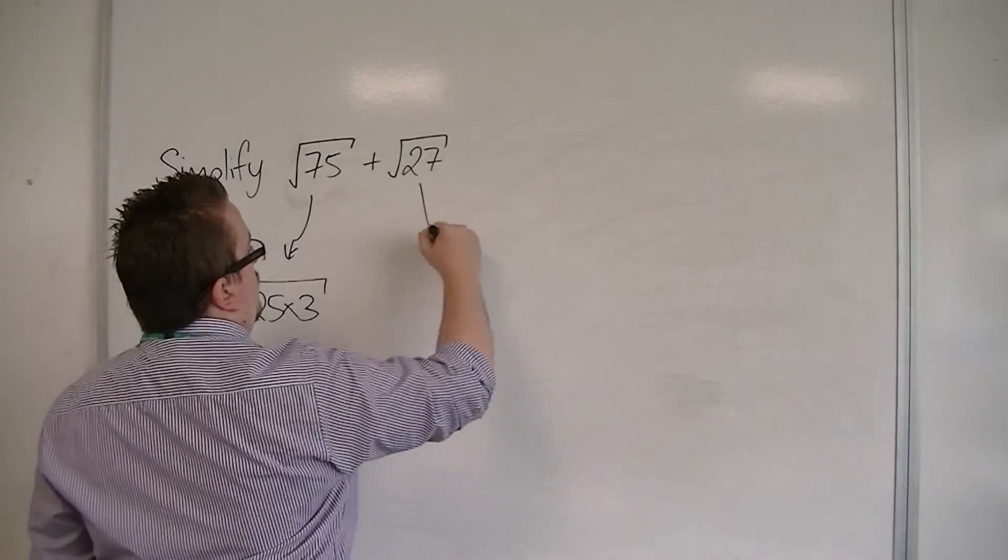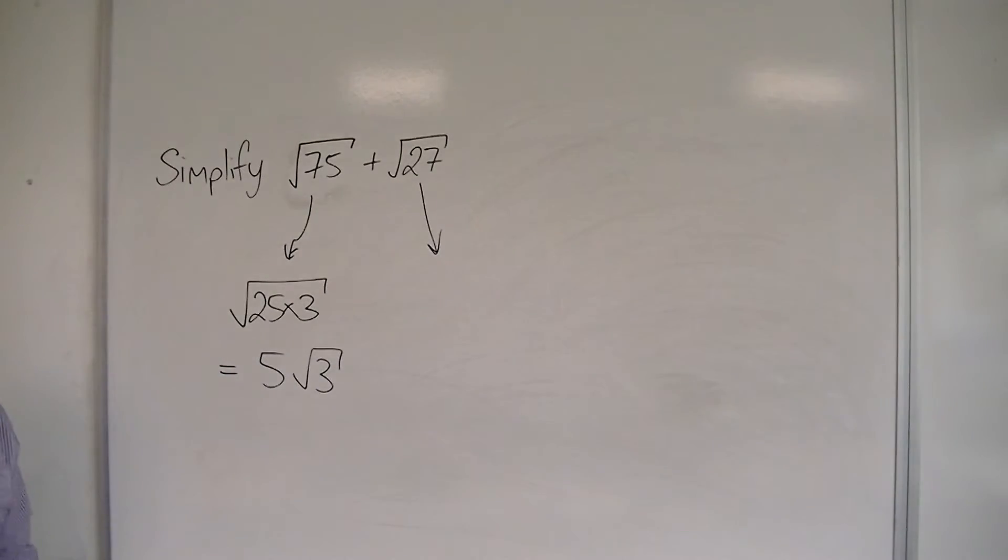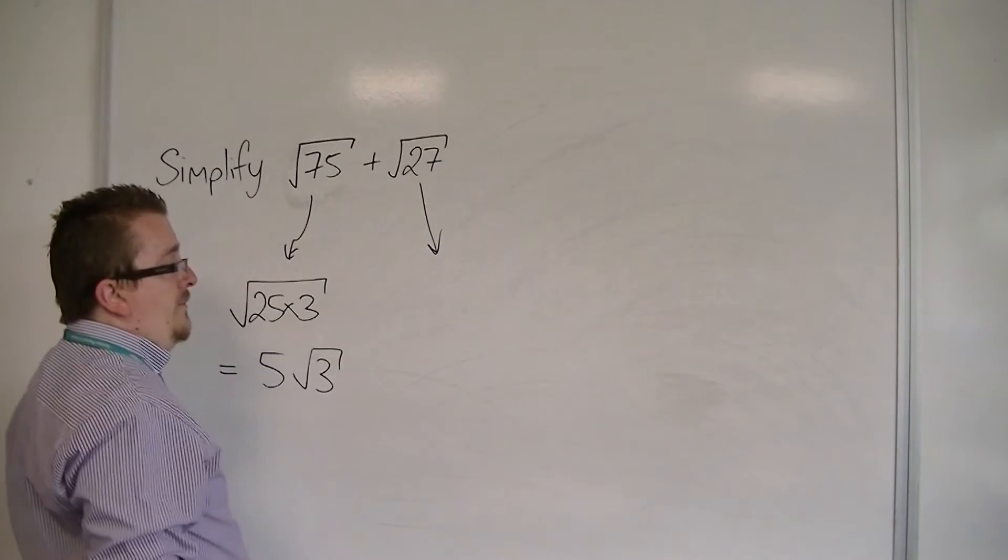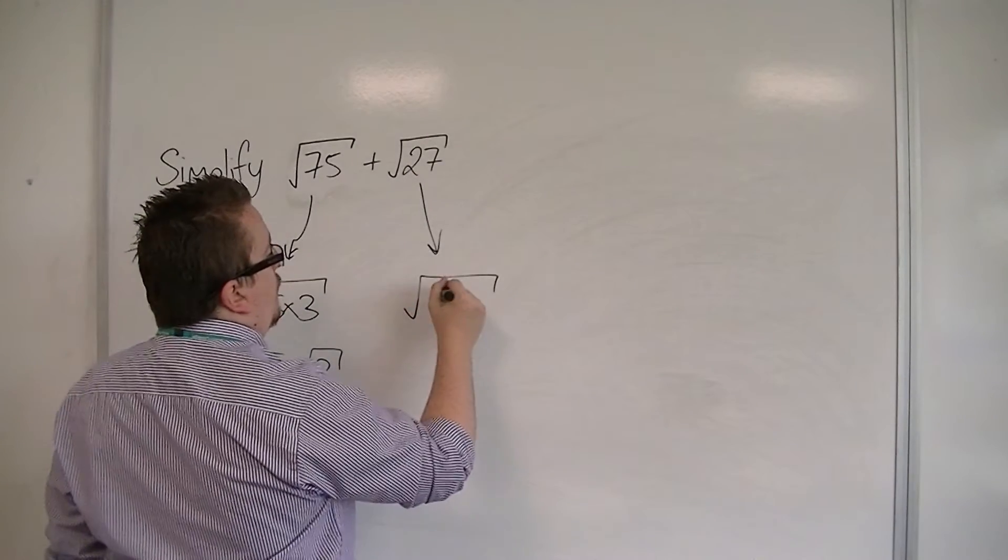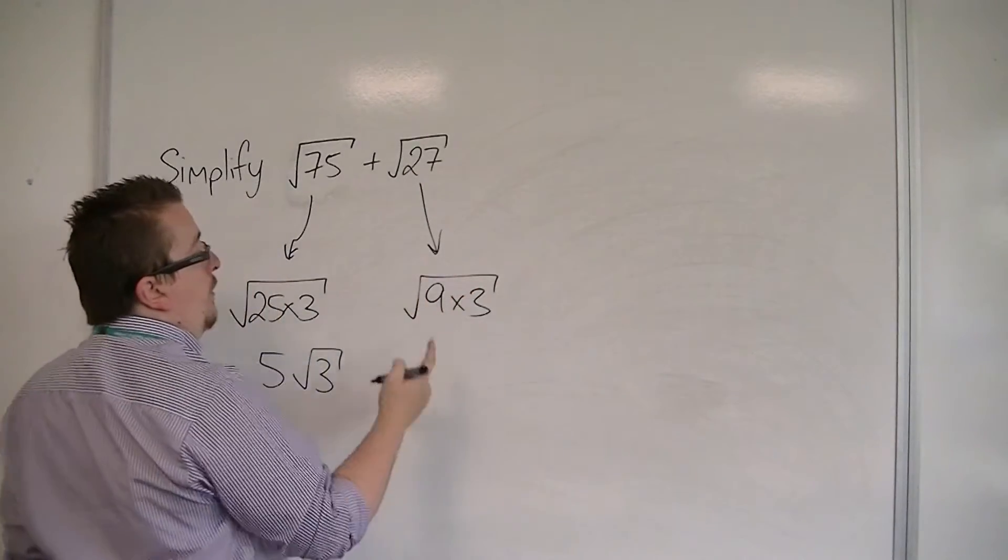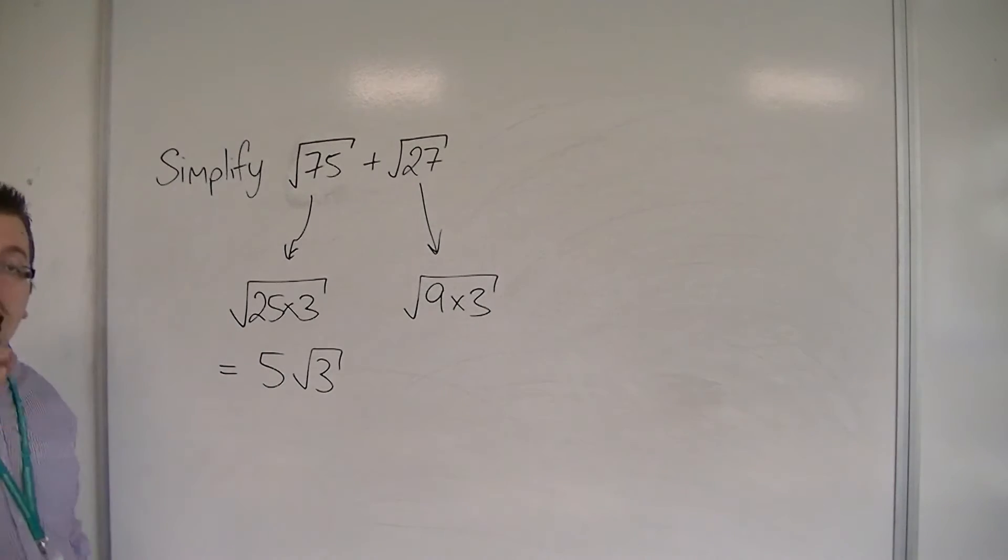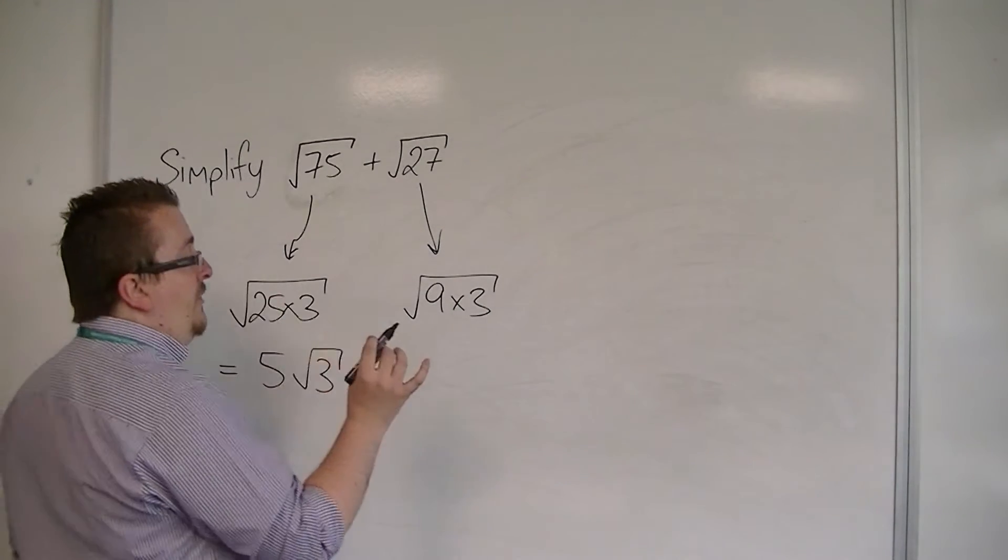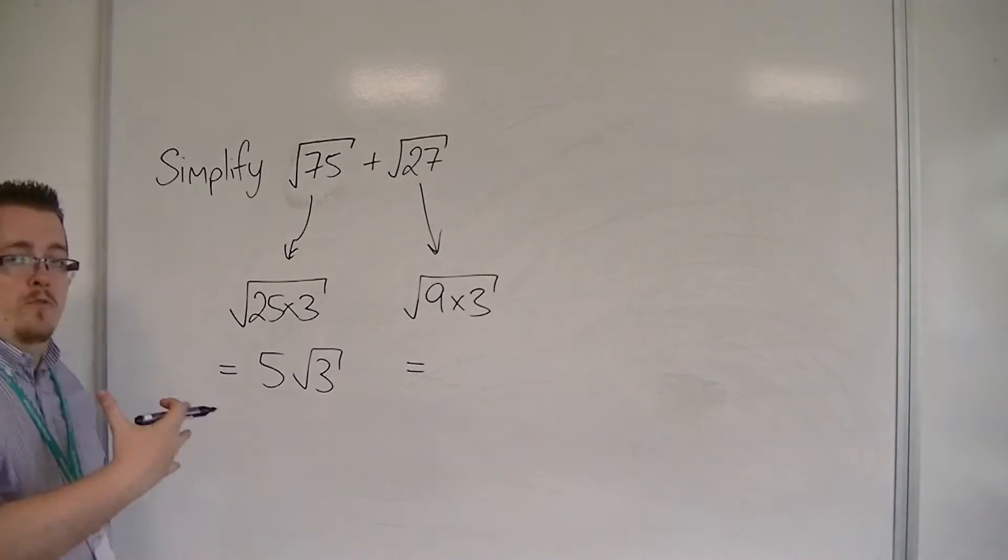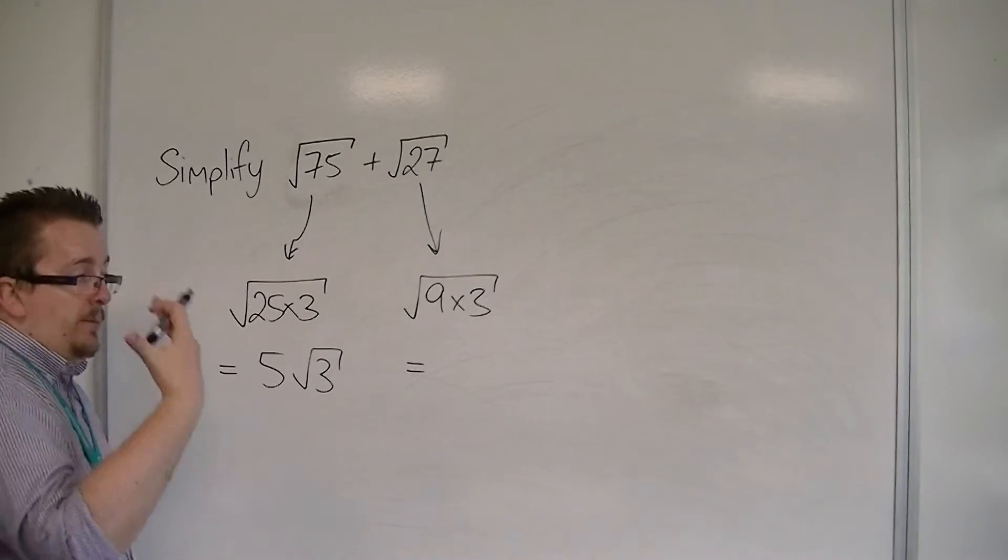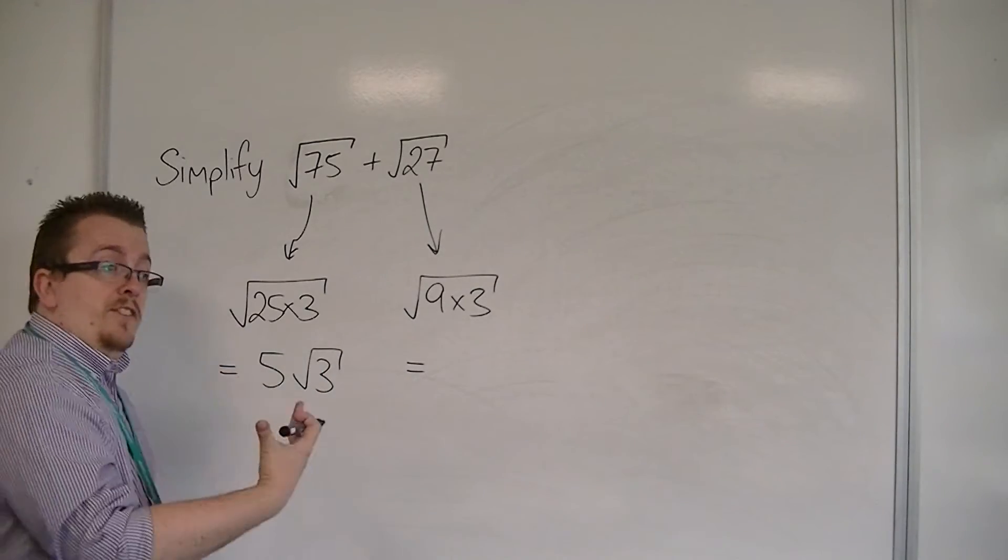Then I've got root 27, so I want to do a similar job with that one. The square root of 27 is the square root of 9 times 3. I've looked for the square number that I know goes into 27, which is 9. I know it goes into 27 three times. And then I can split that square root apart into square root of 9 times square root of 3. Square root of 9 is 3.